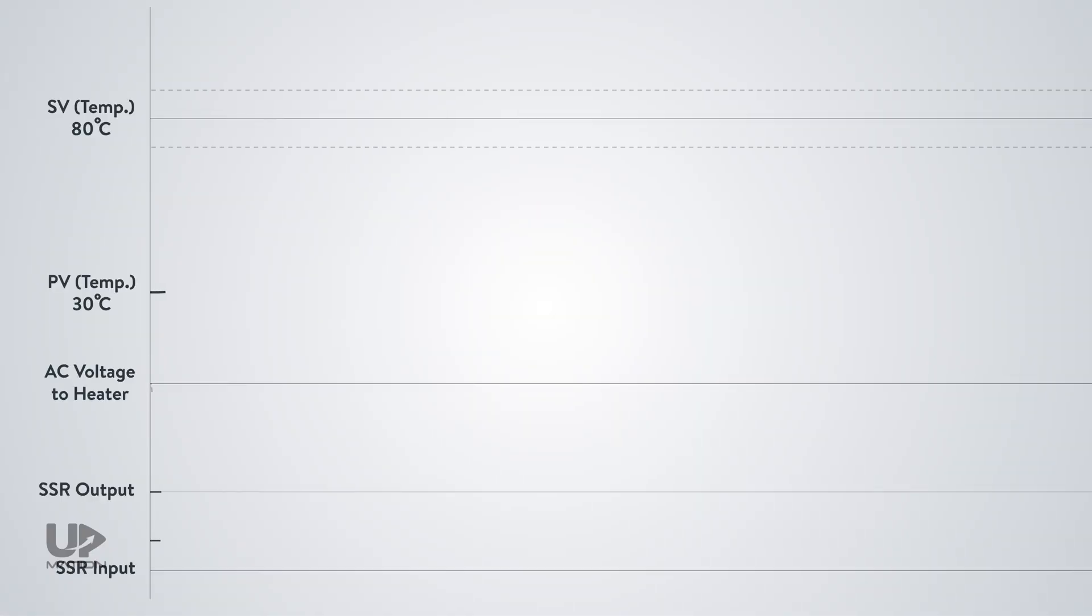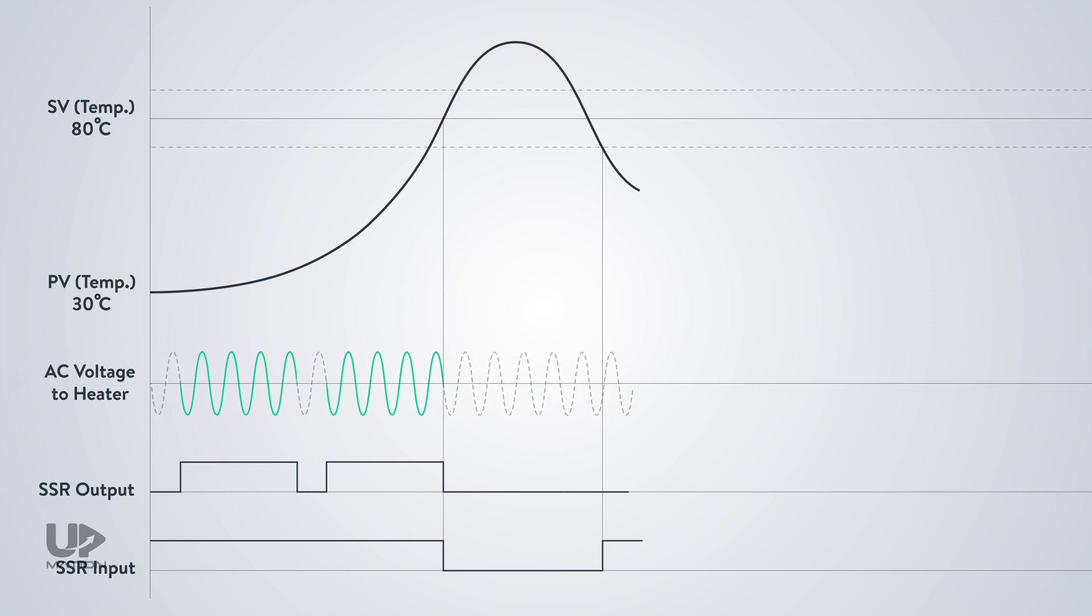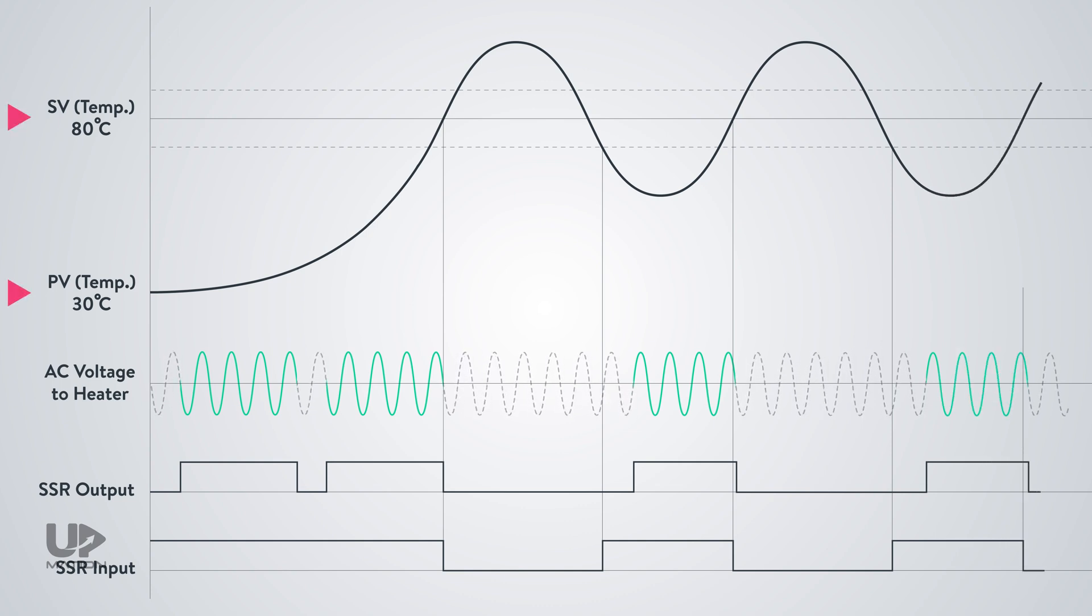So, on this graph, you see the control DC voltage from the controller to SSR, the SSR output status, the output AC voltage to the heater, and finally, the temperature changes in the process.